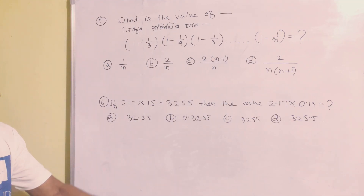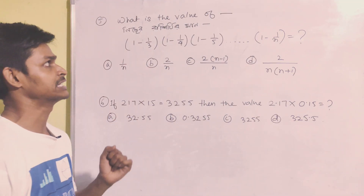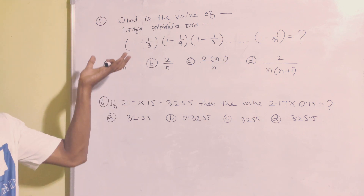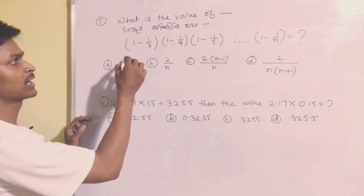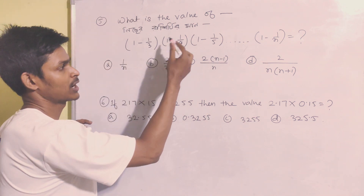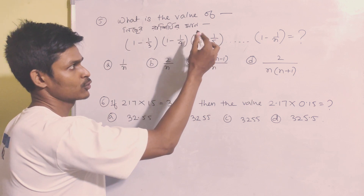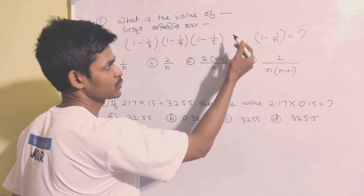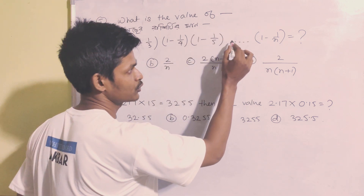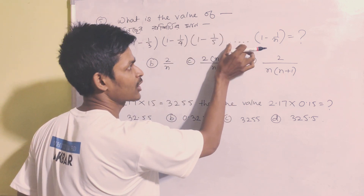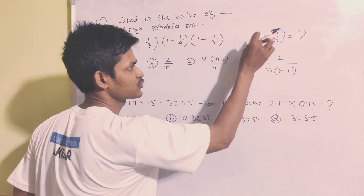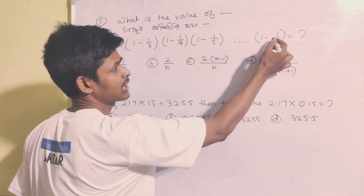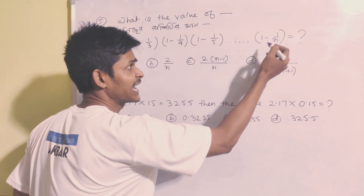Next question: What is the value of the following series? The series is (1 minus 1 by 3) times (1 minus 1 by 4) times (1 minus 1 by 5) dot dot dot up to (1 minus 1 by n).